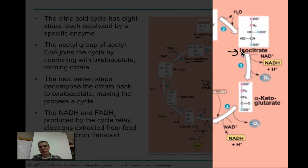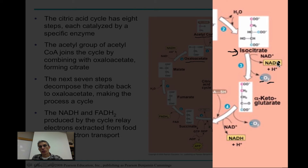As we make alpha-ketoglutarate, we have a couple of products being produced. One of those products is CO2, so we're losing a carbon. We're also going to lose a hydrogen — NAD+ is reduced to that electron carrier NADH. If we count the carbons: isocitrate had six carbons, but alpha-ketoglutarate has five. It's really important to keep track of these carbons and hydrogens.